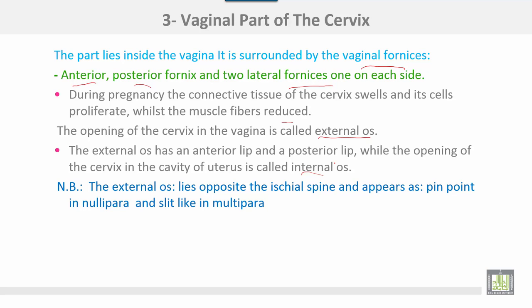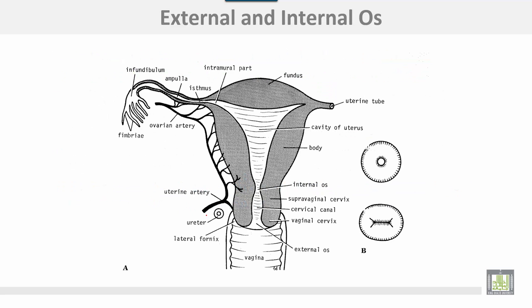The external os lies opposite the ischial spine. It appears as a pinpoint in the nullipara and slit-like in the multipara. This diagram shows the internal os and the external os — pinpoint in the nullipara and slit-like in the multipara.